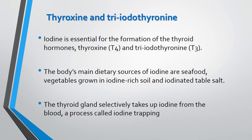Now, the hormones of the thyroid gland are T3 and T4. T3 is triiodothyronine and T4 is thyroxine. Both are very essential. Iodine is very essential for the formation of thyroid hormones.